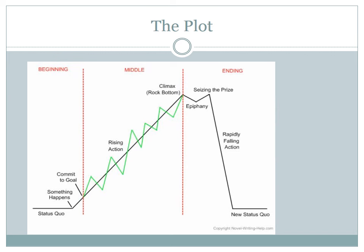Let's think about plot. Plot is how the story is arranged. We start out with a status quo, something happens, and the protagonist has to commit to a goal. There's rising action that gets more and more complicated until we reach a crisis point where we're forced to make a decision or take action. That leads to a climax, which leads to an epiphany — sometimes we seize the prize, sometimes we lose it. That leads to rapidly falling action, and then we have a new status quo where the character changes.